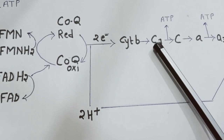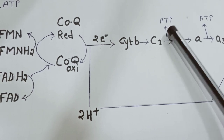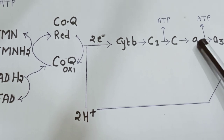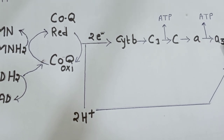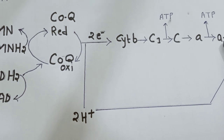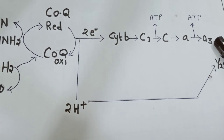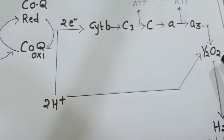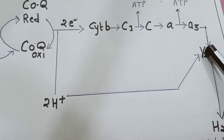Cytochrome b receives the electron and passes it to cytochrome c1, which passes it to cytochrome c — during this step an ATP molecule is produced. The electron is then received by cytochrome a, passed to cytochrome a3, and another ATP is produced. The final receiver of this electron is cytochrome a3, which provides the electron to nascent oxygen.